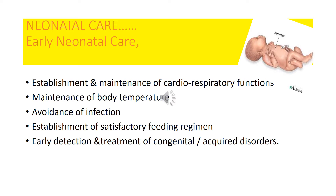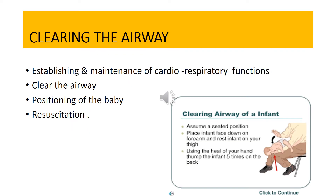Number two: to maintain the body temperature of the infant. Number three: to prevent the baby from any sort of infection. Number four: establishment of a satisfactory feeding regime. Number five: early detection and treatment of any congenital and acquired disorders, especially infections. When the baby is born, the most immediate measure is the clearance of the airway passage, which maintains the cardiorespiratory function.